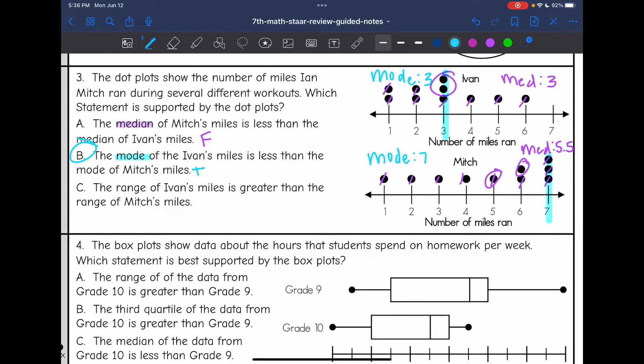So I think my answer should be B. I'm just going to confirm by solving for C. So C says the range of Ivan's miles is greater than the range of Mitch's miles. So remember the range is the least minus, or the greatest minus the least. So Ivan's range would be six minus one, which is five. So Ivan's range is five. And then Mitch's range would be seven, the greatest minus one, the least, which is six. So C said the range of Ivan's miles is greater than the range of Mitch's miles. That is false. It was the other way around. So B is our answer for that one.